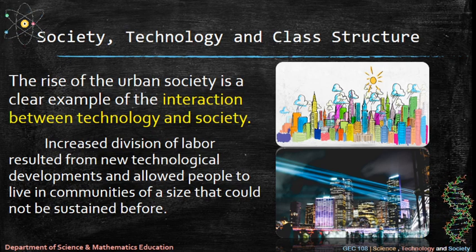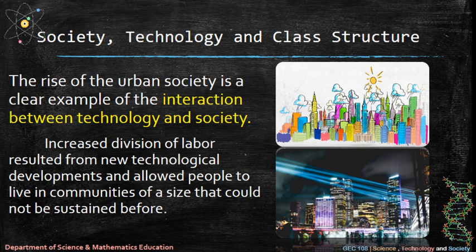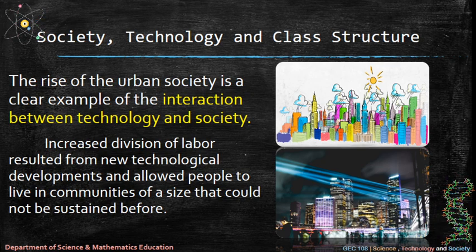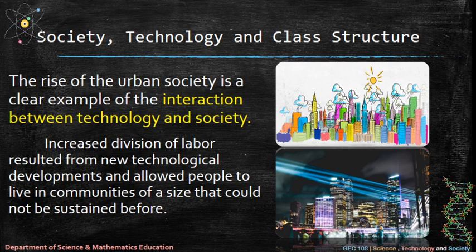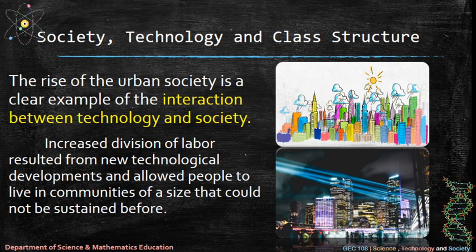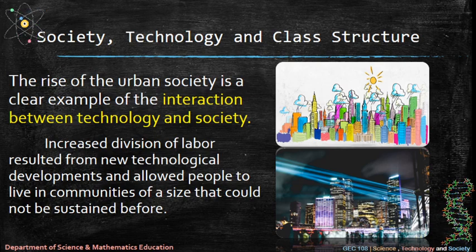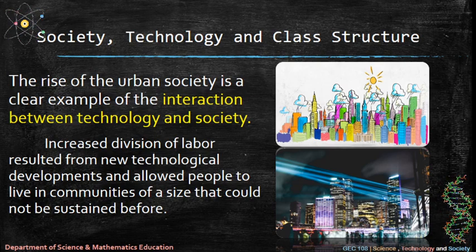The rise of urban society is a clear example of the interaction between technology and society. Increased division of labor resulted from new technological developments and allowed people to live in communities of a size that could not be sustained before.